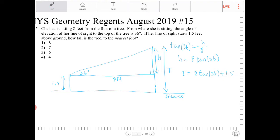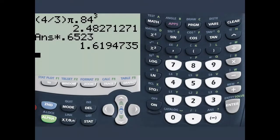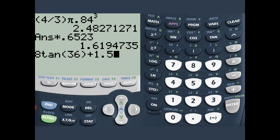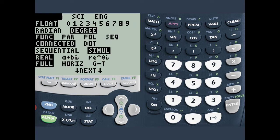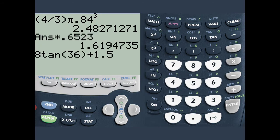So I'm going to enter this into the calculator. I go to my calculator, and I type in 8 tangent of 36, close parentheses, plus 1.5. And when you do this, make sure your calculator setting is in degrees. So it's the third row, second option. And I'm going to press enter.